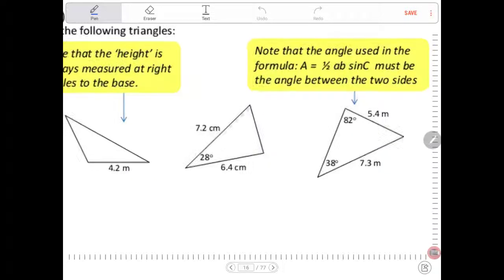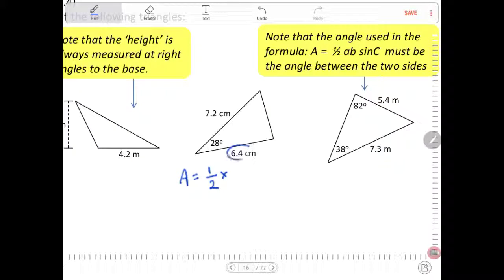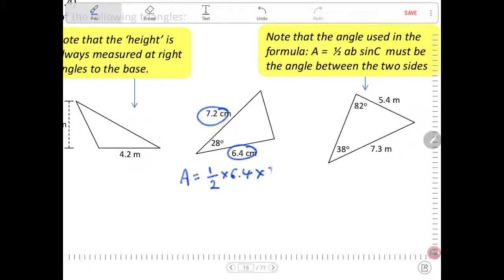So first off, the area A is equal to a half multiplied by one of the side lengths, it doesn't matter which order you go in, I'll go 6.4, that side length, multiplied by this one, 7.2, multiplied by the sine of the angle in between.